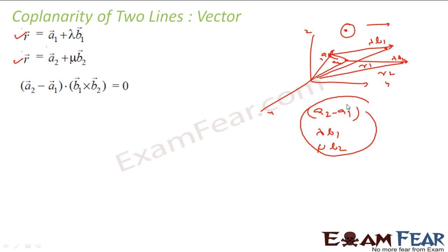All these are in the same plane. My A2 minus A1 is this vector. Lambda B1 and lambda B2 are in the same plane. If lambda B1 is in the same plane, B1 will also be in the same plane and B2 will also be in the same plane. So A2 minus A1, B1, and B2 are in the same plane. What I am doing is finding the cross product of B1 and B2, getting something which is perpendicular to this plane.